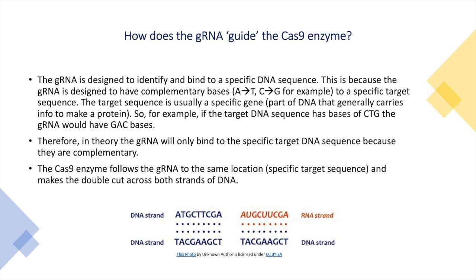The target sequence is usually a specific gene, which is a part of the DNA that carries information to encode a protein. So, for example, if the target DNA sequence has bases of CTG, the guide RNA will have bases of GAC. Therefore, in theory, the guide RNA will only bind to the specific target DNA sequence because they are complementary.